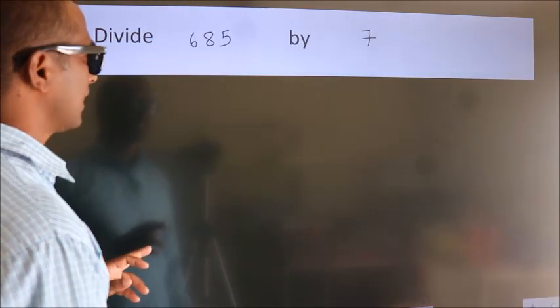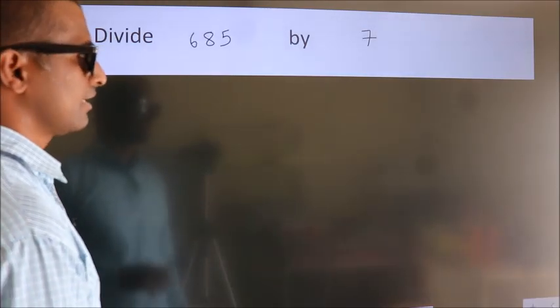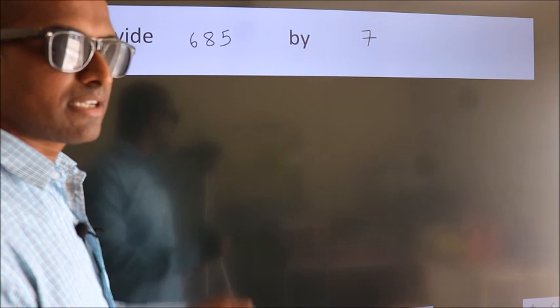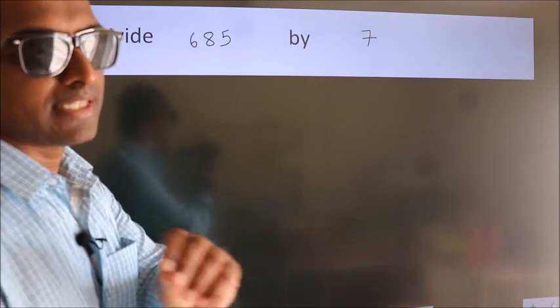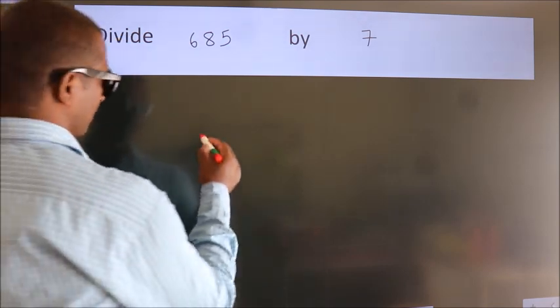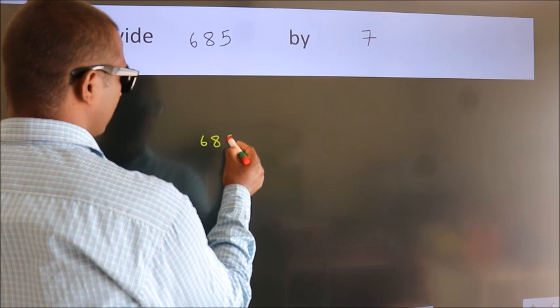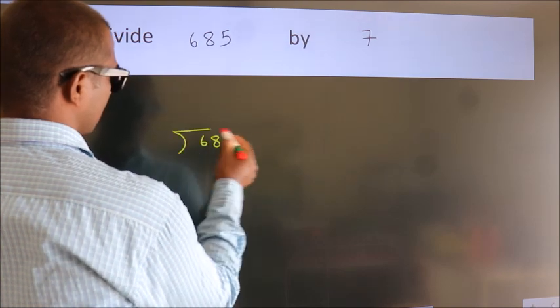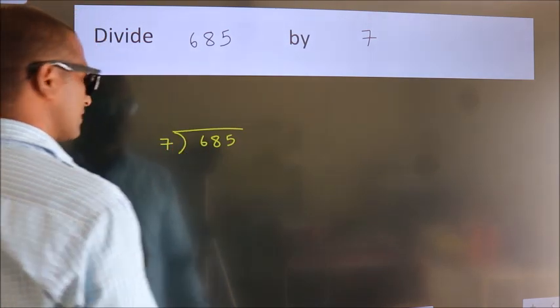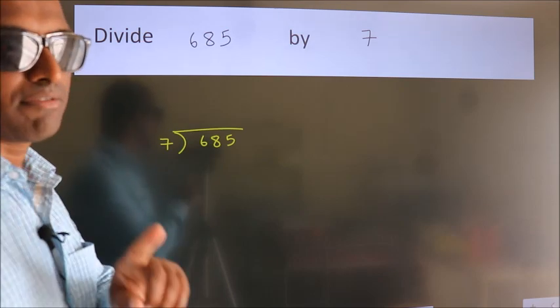Divide 685 by 7. To do this division, we should frame it in this way. 685 here, 7 here. This is your step 1.